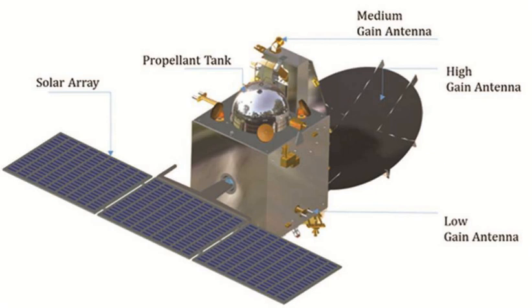The Mars Orbiter Mission probe lifted off from the first launch pad at Satish Dhawan Space Center using a Polar Satellite Launch Vehicle rocket C-25 at 9:08 UTC on 5 November 2013. The launch window was approximately 20 days long starting on 28 October 2013. The MOM probe spent about a month in Earth orbit, where it made a series of seven apogee-raising orbital maneuvers before trans-Mars injection on 30 November 2013.